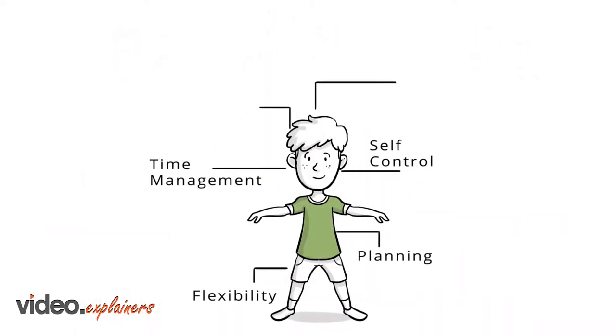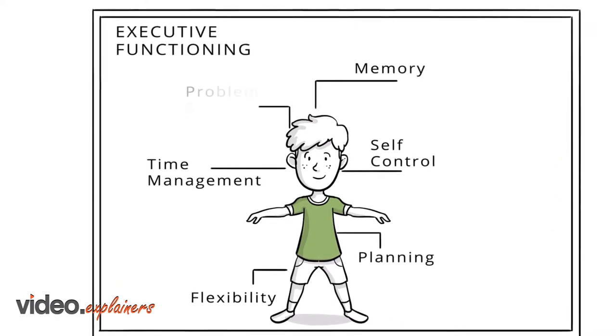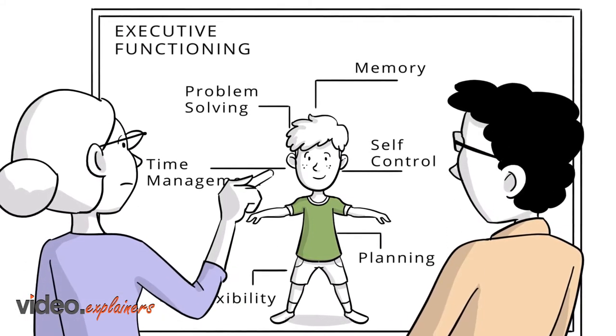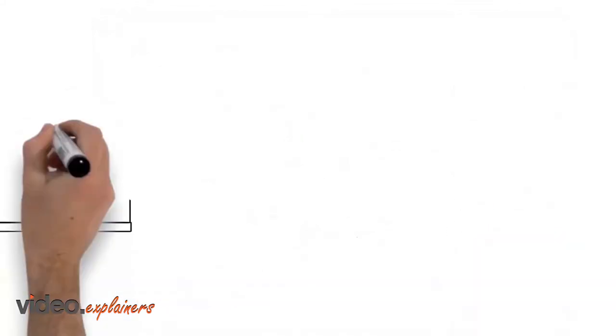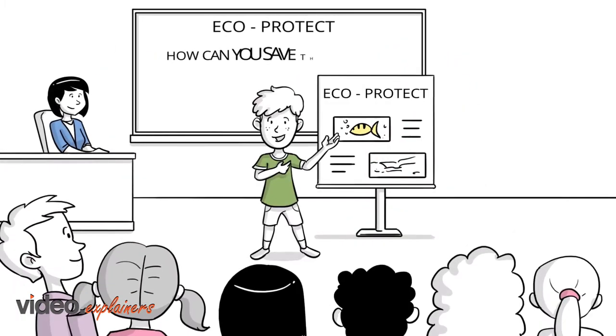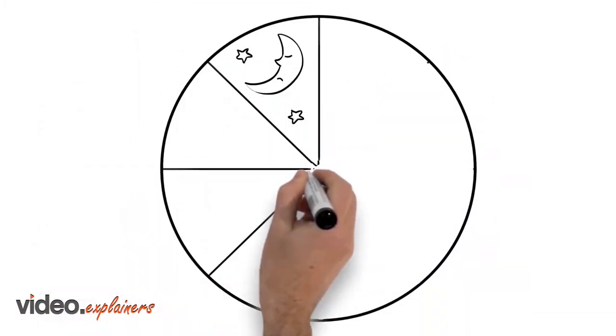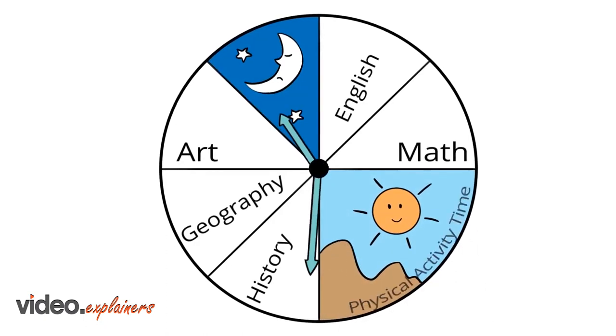Children need tailored learning plans. They need executive functioning skills like memory and problem-solving. They need social emotional learning capabilities. But where is the time to instill these skills in every child in your school?